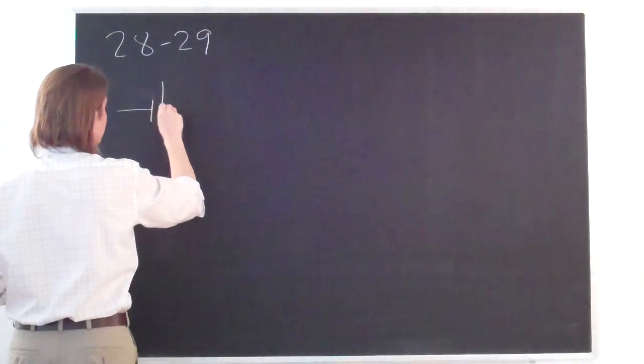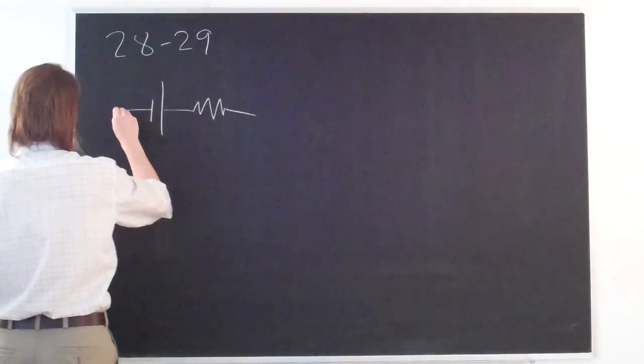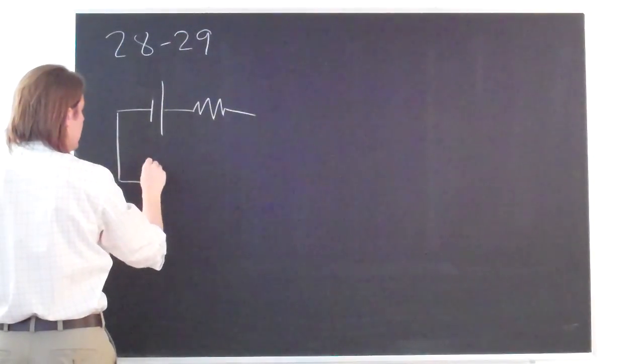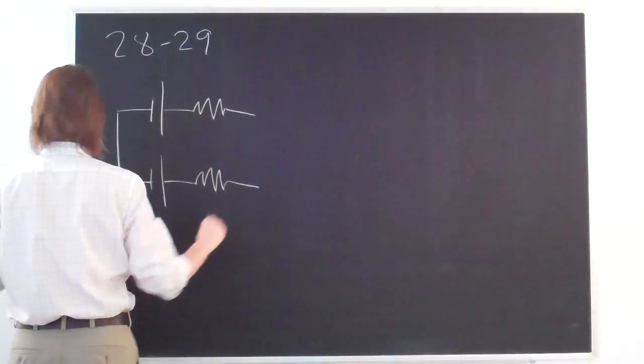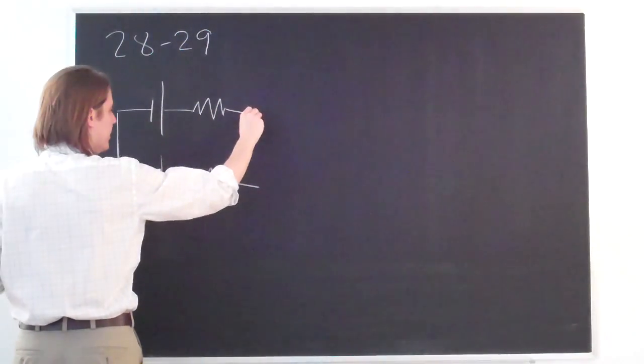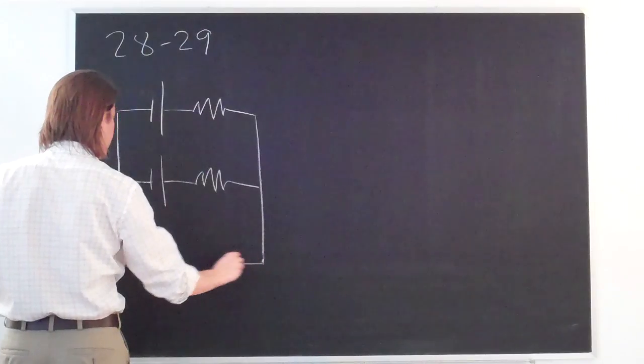One battery and then a resistor. And then coming down here another battery facing the same way and another resistor, and then it all comes together to the third branch.